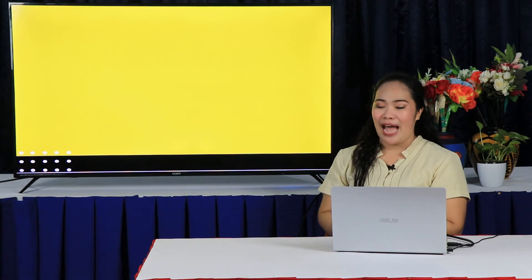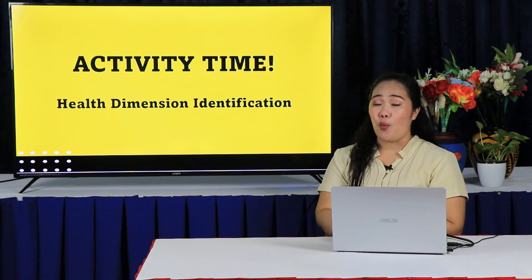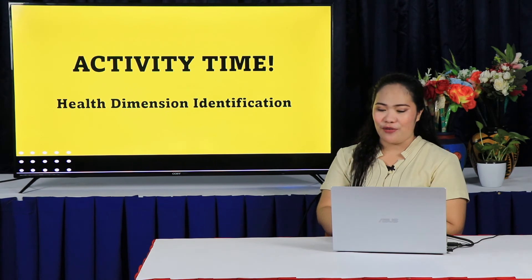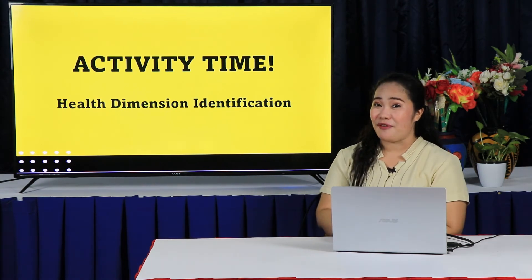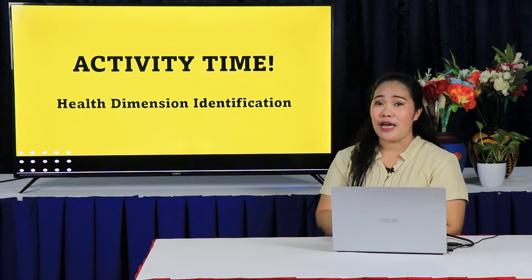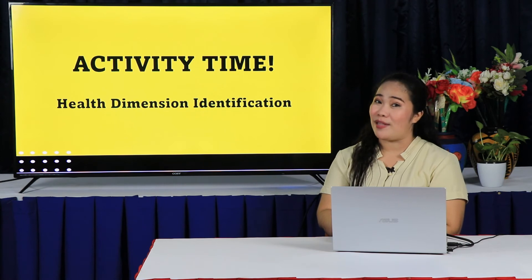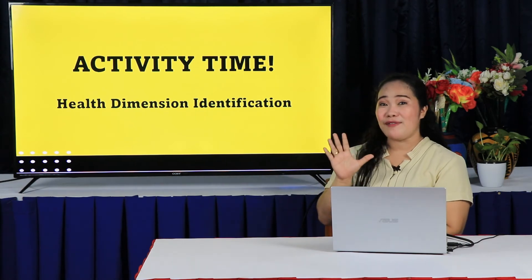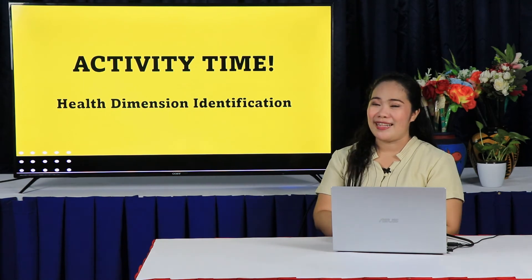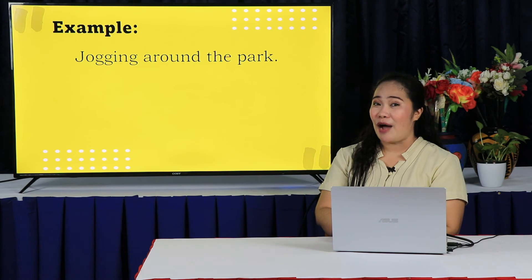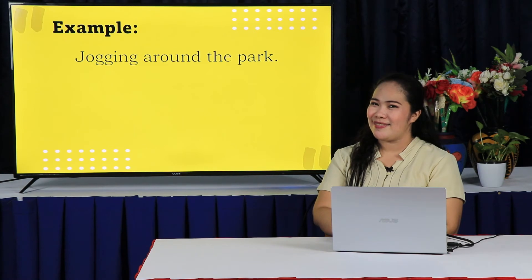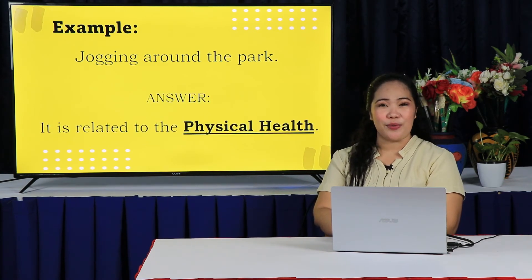Now that we are done with our discussion, let us have a short activity. This activity will check on how well you practice healthy habits to achieve holistic health. Try to identify if the activities are related to physical health, mental health, emotional health, social health, environmental health, or moral-spiritual health. I will be giving you 5 seconds to answer. Let us have first an example: jogging around the park. It is related to physical health.